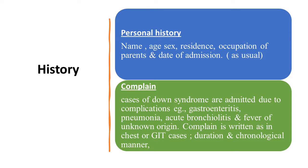History taking starts with personal history. When it comes to the complaint, this is usually a case admitted to the hospital, so the complaint will typically reflect a complication of Down syndrome — most commonly an infection like pneumonia or gastroenteritis. Some complaints relate to heart failure, since Down syndrome cases are known to have congenital heart disease, which can cause respiratory distress leading to admission.